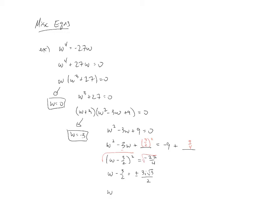And finally, w equals three over two plus or minus three i root three over two, giving us our final two solutions to the original equation.